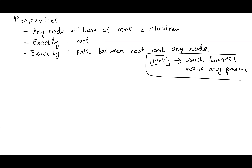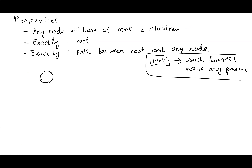Suppose there is a tree with just one node and nothing else. Is this a binary tree? This node has no parent, so it is the root — exactly one root. It has zero children, which is less than two, so the first property is valid. And since there is no other node, the path property is trivially true. So this is also a valid binary tree.